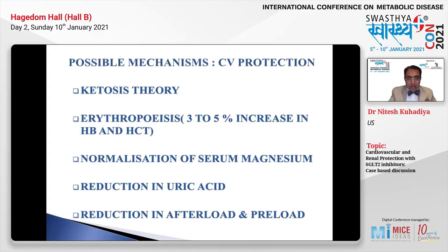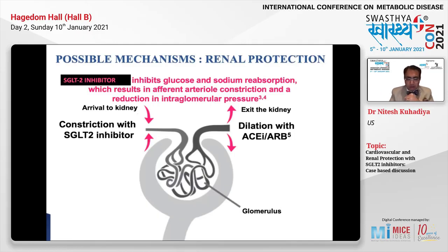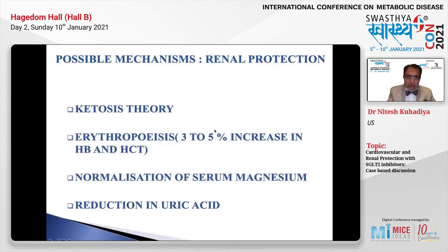Regarding renal protection: when you block glucose reabsorption, you also block sodium reabsorption in the proximal tubule. This presents a higher sodium load to the distal tubule, where the macula densa senses this high sodium and triggers vasoconstriction of the afferent arteriole, reducing glomerular flow and glomerular pressure — beneficial for the kidneys. ACE inhibitors and ARBs reduce glomerular flow and pressure by dilating the efferent arteriole. Additionally, ketosis, erythropoiesis, normalization of serum magnesium, and uric acid reduction are also believed to be renal protective, since the diabetic kidney is believed to be hypoxic at baseline.